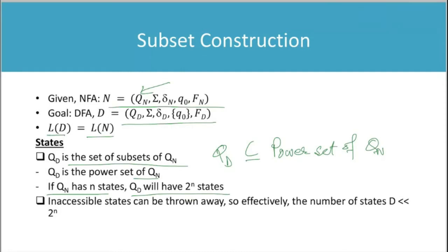But this is not always true, you can see here. Inaccessible states can be thrown away. So effectively, the number of states—the cardinality of QD—is much, much less than the number of sets available in the power set of QN. So that is a good thing we have.